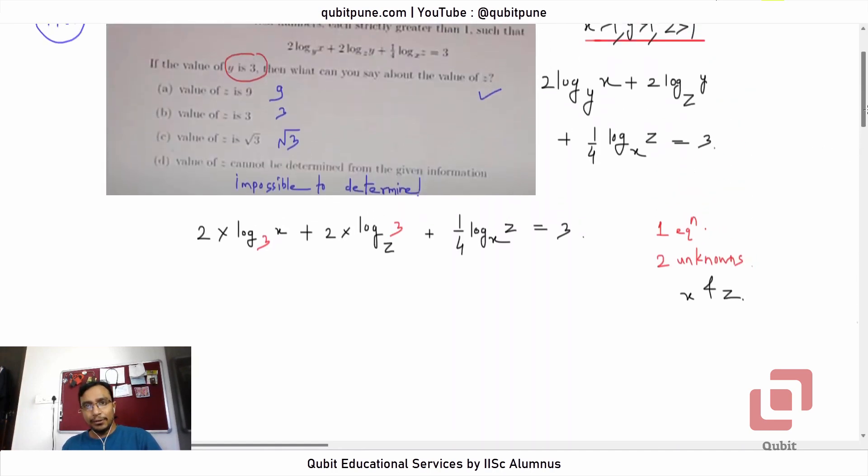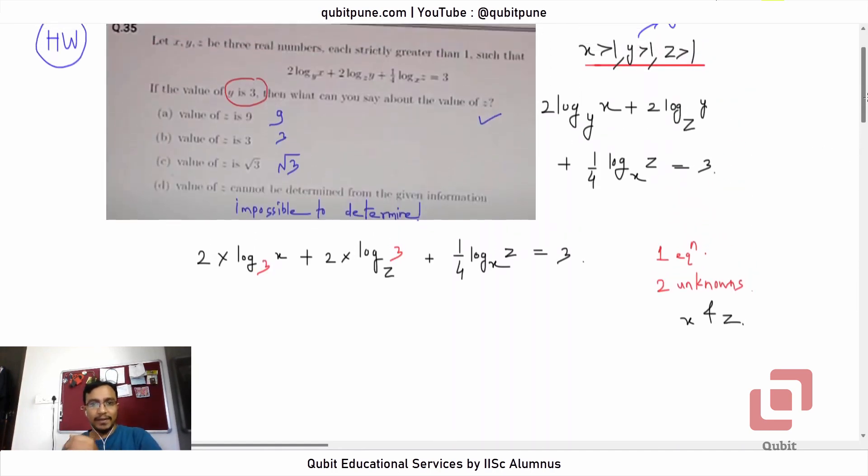So ideally you would say that the value of z cannot be determined from the given information because we cannot guarantee that there exists a unique solution for x and z. But we can actually think about solving this problem in the following way: we can make use of this part of the statement—each strictly greater than one.